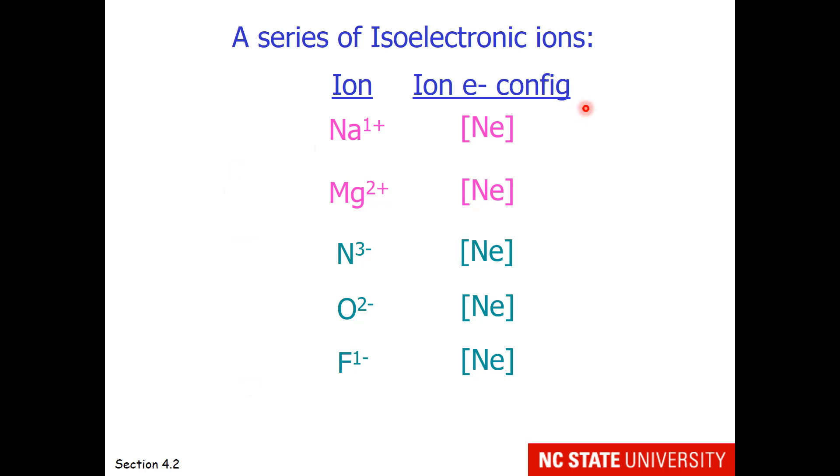Now keep in mind that although these are all isoelectronic with neon, they will have different sizes, because they have different z-effectives, which are also affected by the loss of electrons.